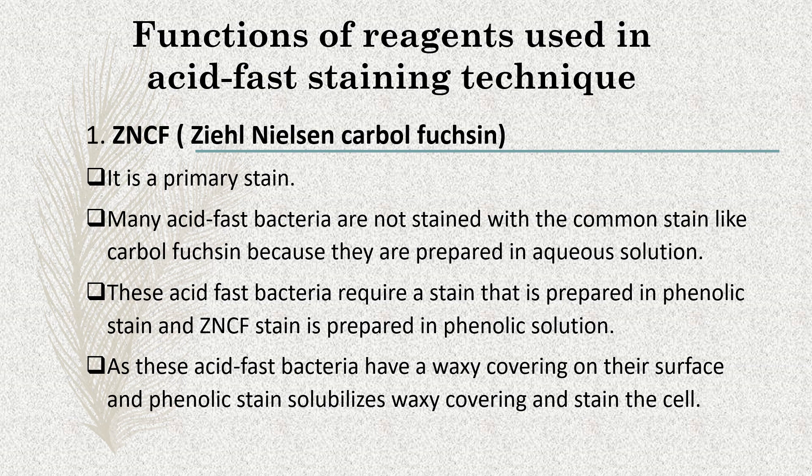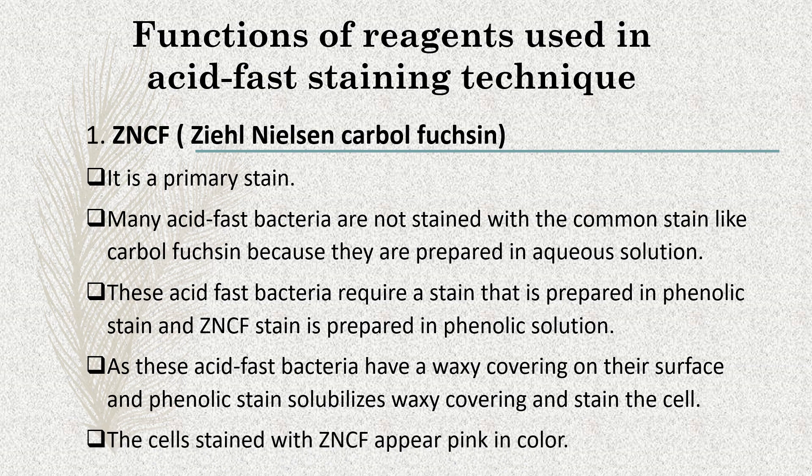Normal stains are of no use here because they are made in aqueous solution. For acid-fast staining, we require ZNCF stain because it is prepared in phenolic solution. The phenolic solution solubilizes the waxy coating on the cell surface, and after solubilizing the waxy coating, the stain enters and stains the cell. The cells get stained with ZNCF and appear pure pink in color. The next reagent is acid-alcohol, which is a decolorizing agent — it removes the stain from inside the cells. It is prepared from 3% hydrochloric acid and 95% ethanol.